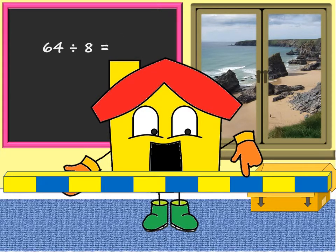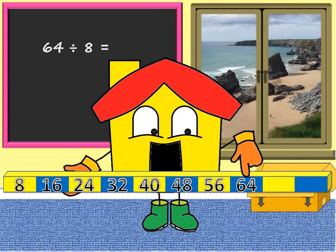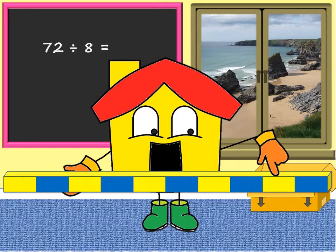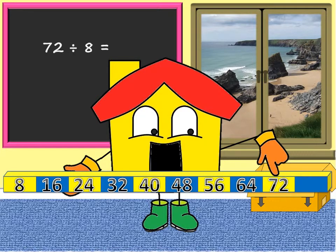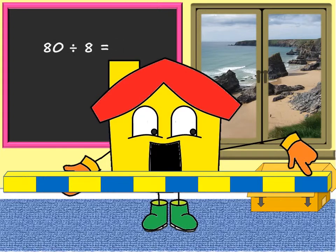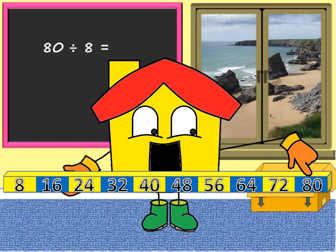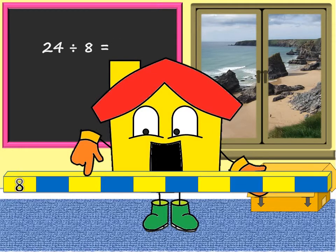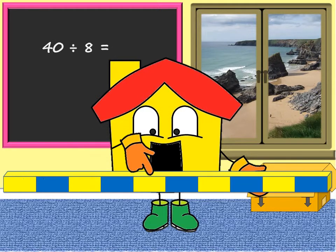64 shared between 8. 72 shared between 8. 80 divided by 8. How many groups of 8 are 24? 40 shared between 8.